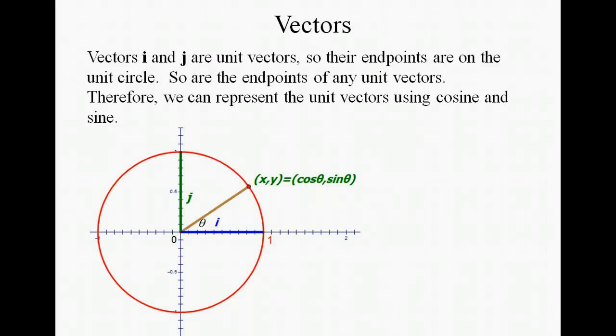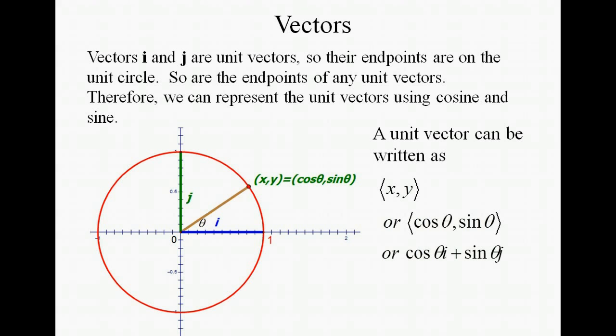Which means that we can represent the vectors using cosine and sine. So the unit vector (x,y) can be given as the vector (cosine θ, sine θ), or as cosine θ i + sine θ j in linear combination form. Remember, this is just for the unit vectors because their magnitude is 1.